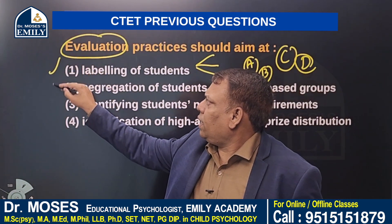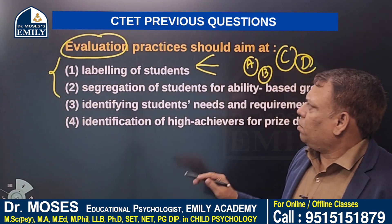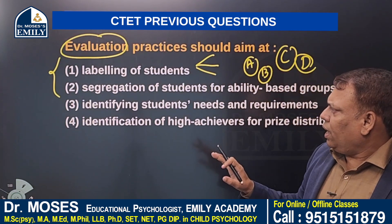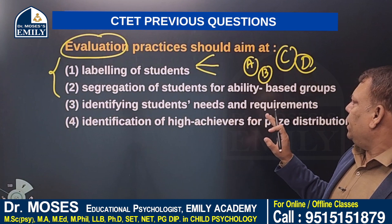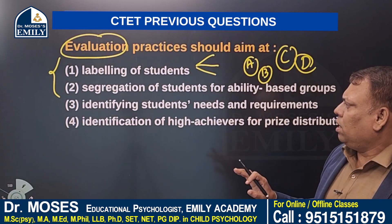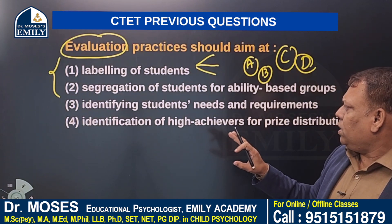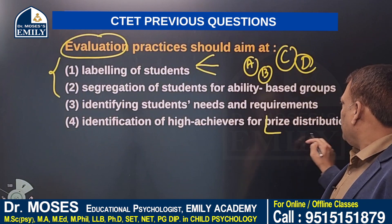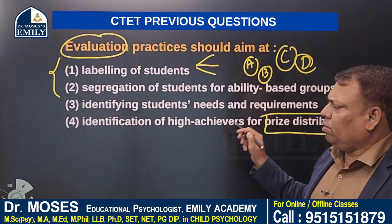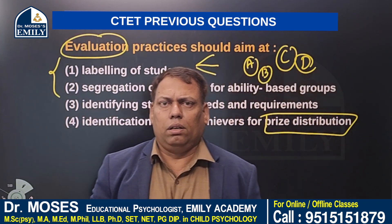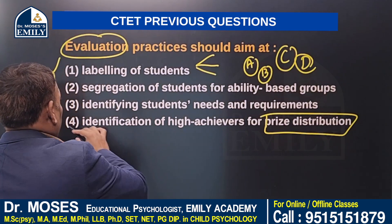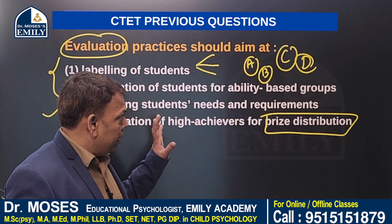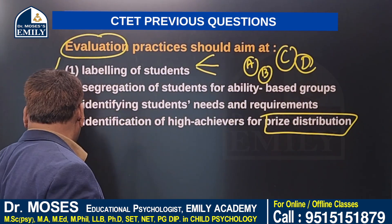These two are not correct — it is not the purpose of evaluation. Option number three: identifying students' needs and requirements. Option number four: identification of high achievers for prize distribution. The purpose of evaluation and assessment is not for prize distribution. Option three is correct: identifying students' needs and requirements.